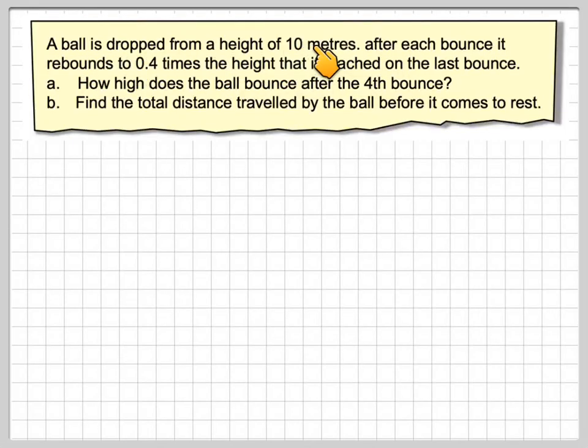A ball is dropped from a height of 10 metres. After each bounce it rebounds to 0.4 times the height that it reached on the last bounce. A. How high does the ball bounce after the fourth bounce? B. Find the total distance travelled by the ball before it comes to rest.